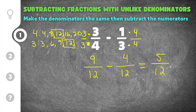Now you check to see if you can reduce this. In this case, nothing goes into 5 or 12 evenly, so that's our solution. 3 fourths minus 1 third is equal to 5 twelfths.